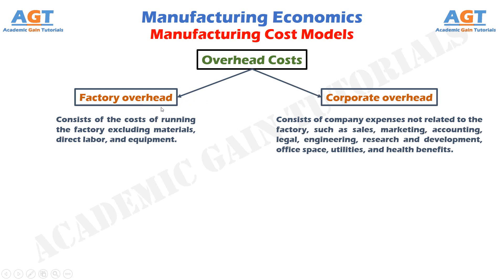Factory overhead consists of the costs of running the factory excluding materials, direct labor, and equipment. This overhead category includes plant supervision, maintenance, insurance, heat and light, and so forth. For example, a worker who operates a piece of equipment may earn an hourly wage of $15 per hour, but when fringe benefits and other overhead costs are figured in, the worker may cost the company $30 per hour.